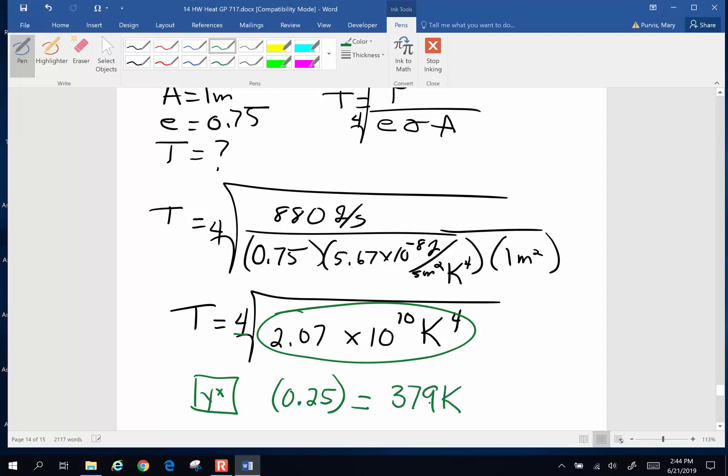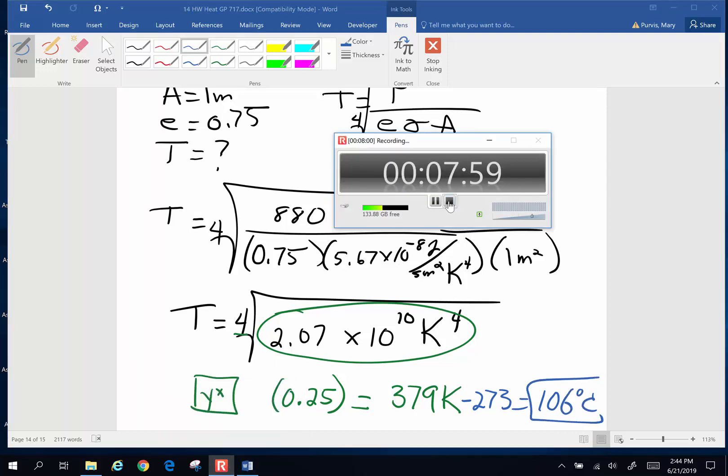And I think the answer they wanted in Celsius. So to get Celsius, minus 273, 106 Celsius. Tadah! Tadah! Tadah!